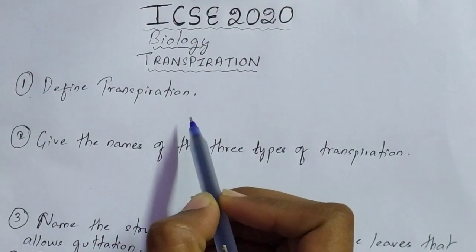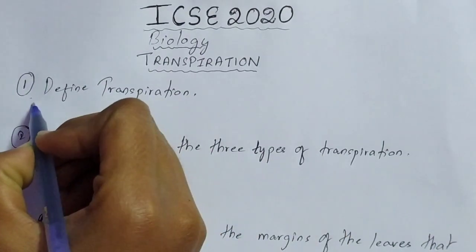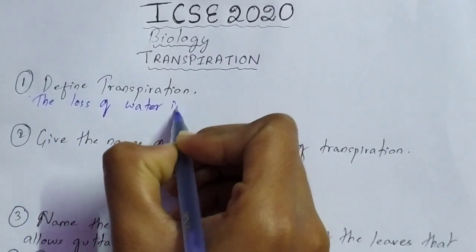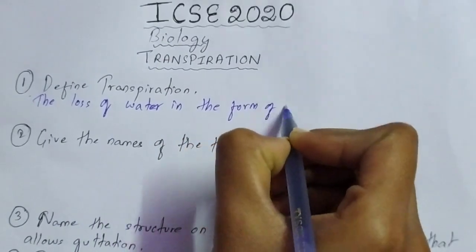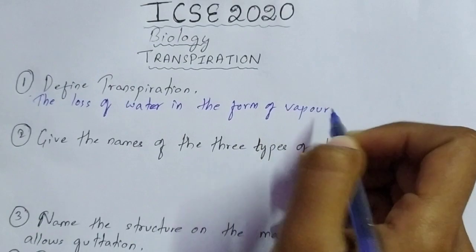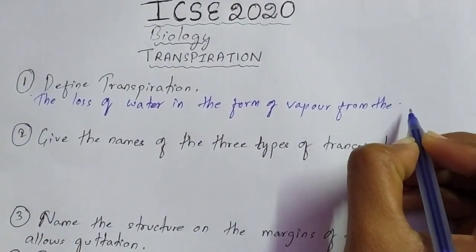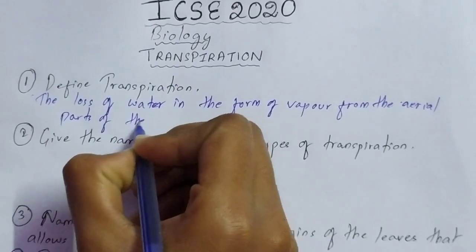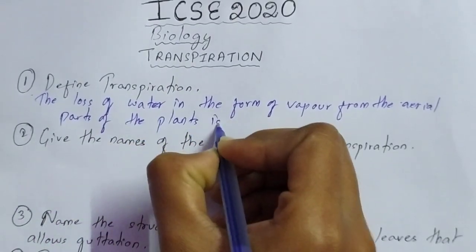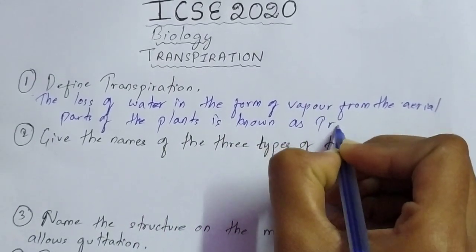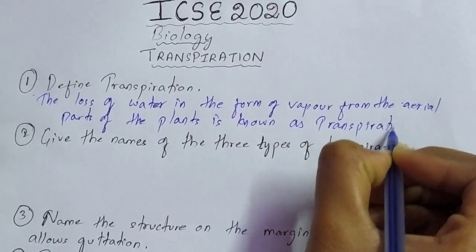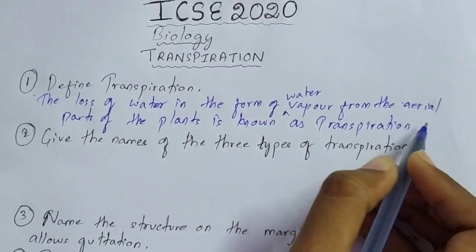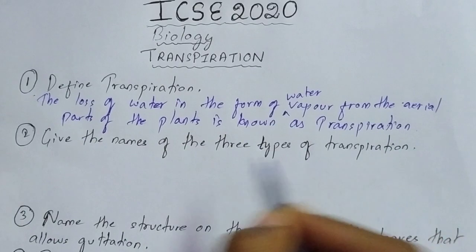The first question is: define transpiration. The loss of water in the form of water vapour from the aerial parts of the plant is known as transpiration. So this is the definition — the loss of water in the form of water vapour from the aerial parts of the plant is known as transpiration.